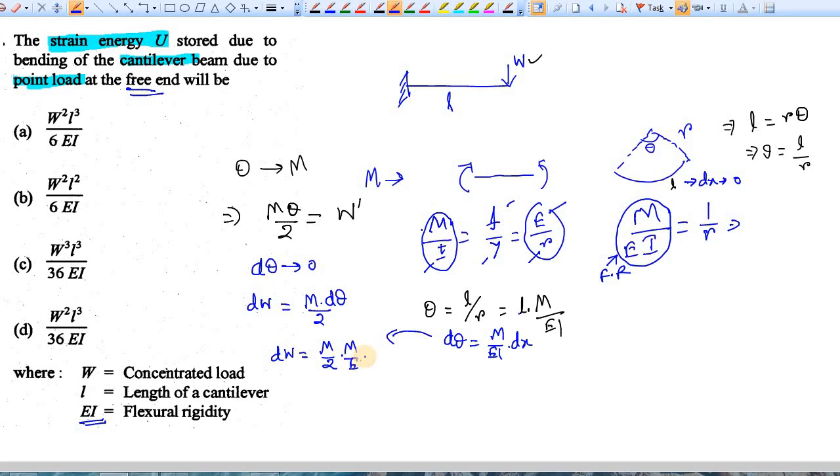So this is coming as M by EI times dx. Put this here and you're getting M by EI times dx. If you integrate, you will get the total work done which is W equals integration of M squared dx by 2EI. So this is the strain energy caused due to bending moment.